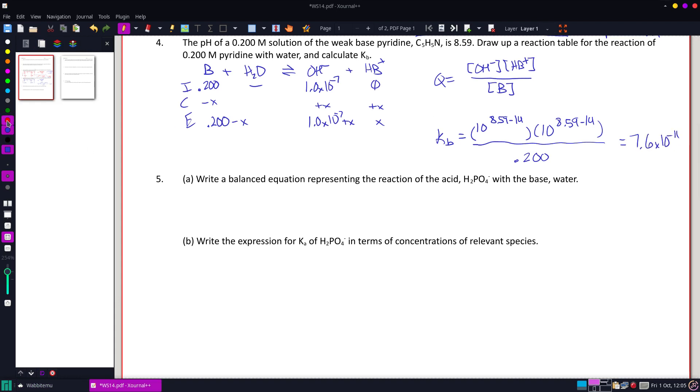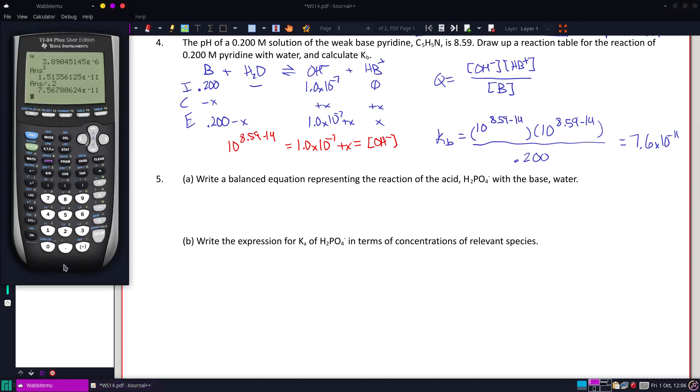All right, now just to see what would happen, we're going to solve for this x slightly different. That is actually equal to the OH concentration, and the OH concentration is 10 raised to the power of 8.59 minus 14. So let's use that to solve for just the x. I'm actually going to do this a little bit slower. So the pOH is 14 minus 8.59, so the pOH is 5.41.